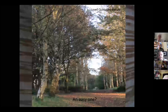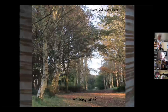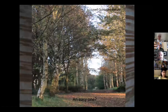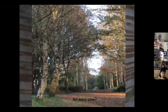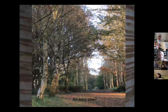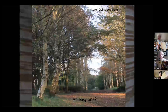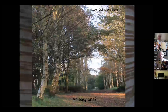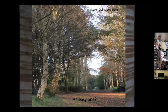Here's an easy one — this is the silver birch avenue at the arboretum. The silvery bark makes it very easy to identify, and I'm sure you will have recognised at a glance that that was the silver birch.